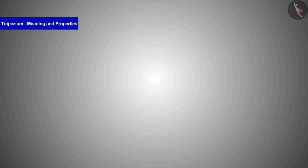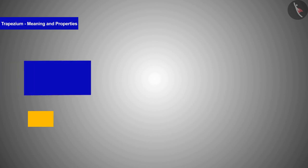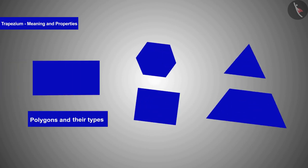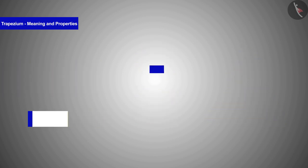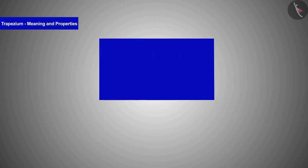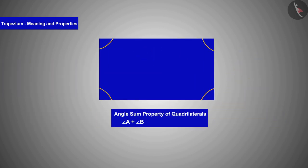So far in geometry, we have come to know about polygons and types of polygons, quadrilaterals, and the angle sum property of a quadrilateral.